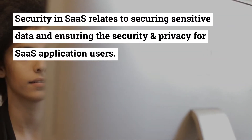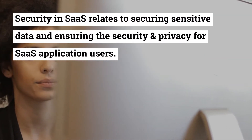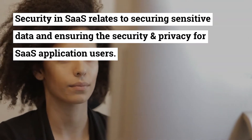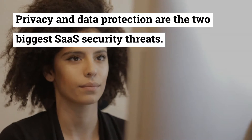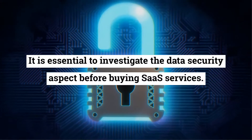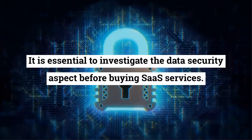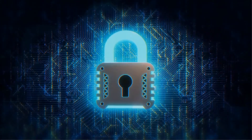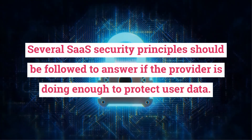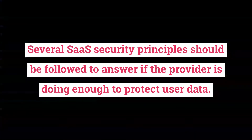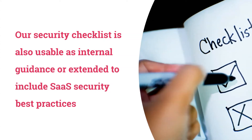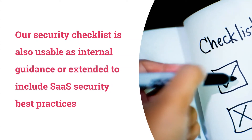Security and SaaS relates to securing sensitive data and ensuring the security and privacy for SaaS application users. Privacy and data protection are the two biggest SaaS security threats. It is essential to investigate the data security aspect before buying SaaS services. Several SaaS security principles should be followed to answer if the provider is doing enough to protect user data. Our security checklist is also usable as internal guidance and extended to include SaaS security best practices.